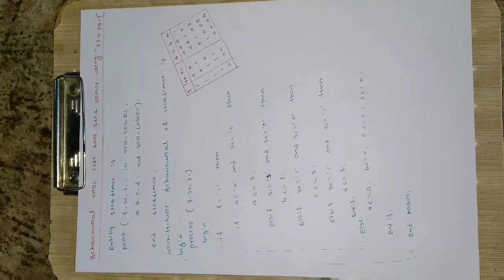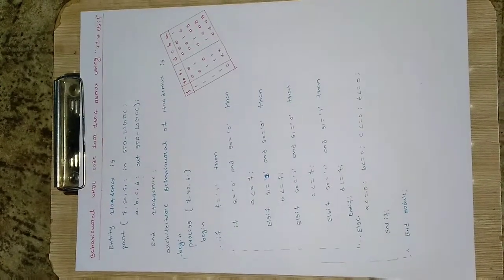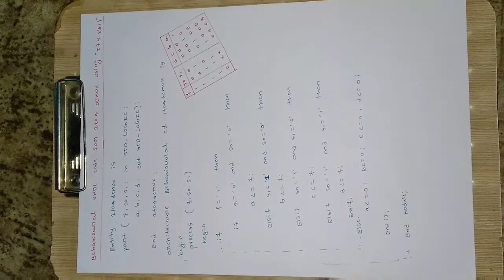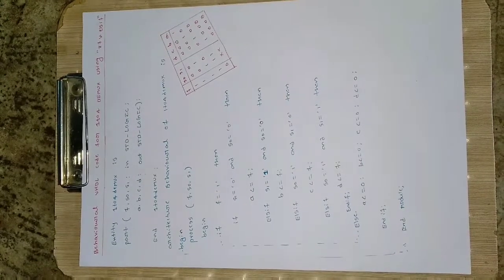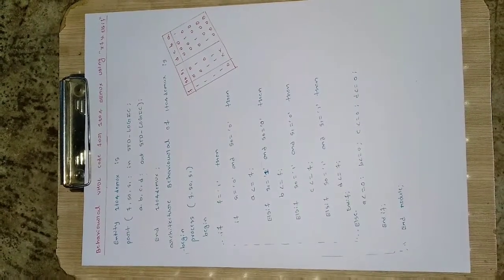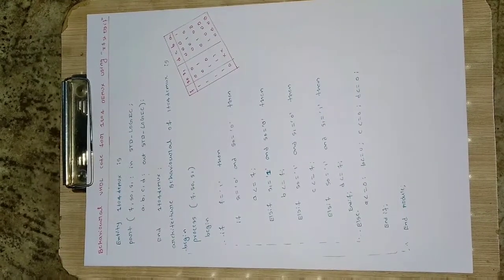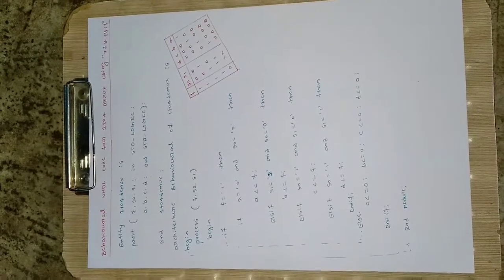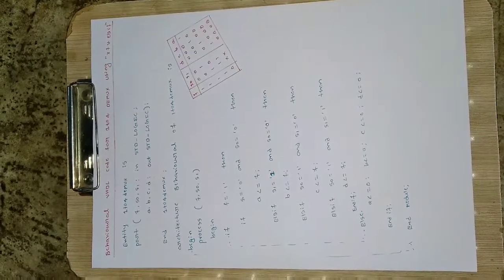Hey everyone, in this video we will see how to write the behavioral VHDL code for a 1-to-4 DMUX using if and else if statements. In my previous video we saw how to write the behavioral VHDL code for a 1-to-4 DMUX with the help of case statements. We will now try to find out how we can write it with the help of if and else if statements.